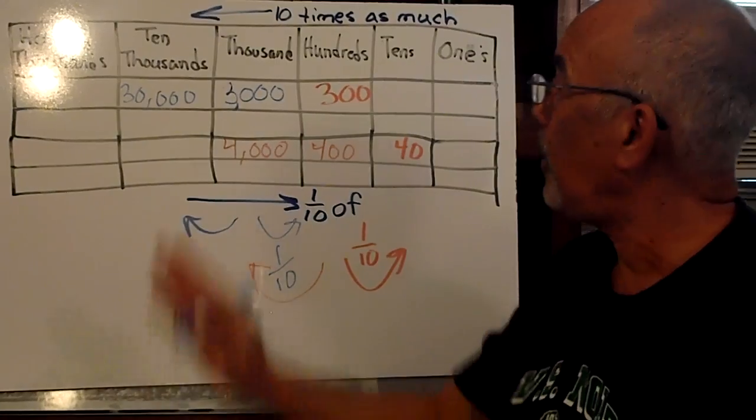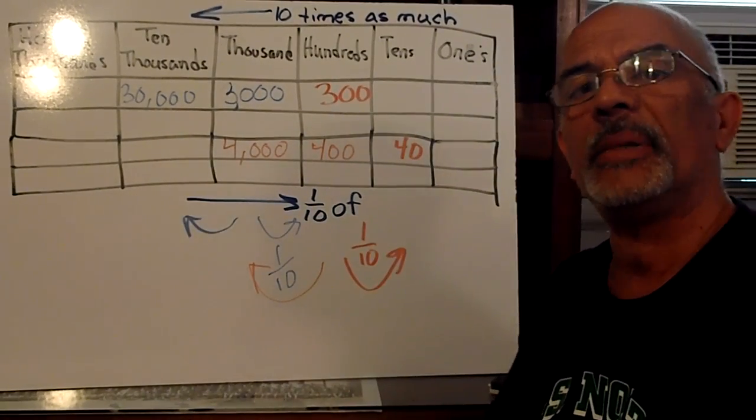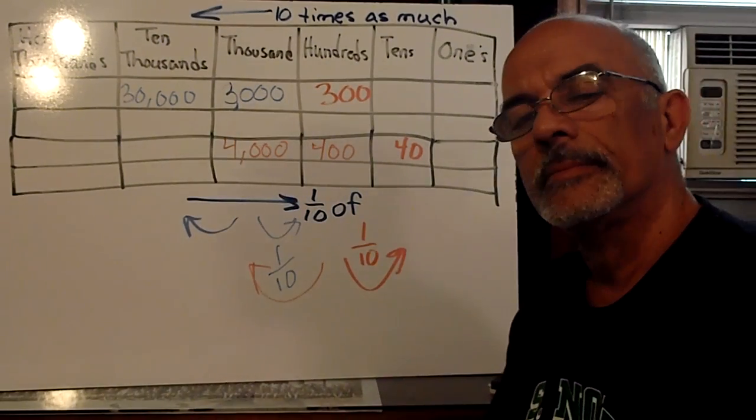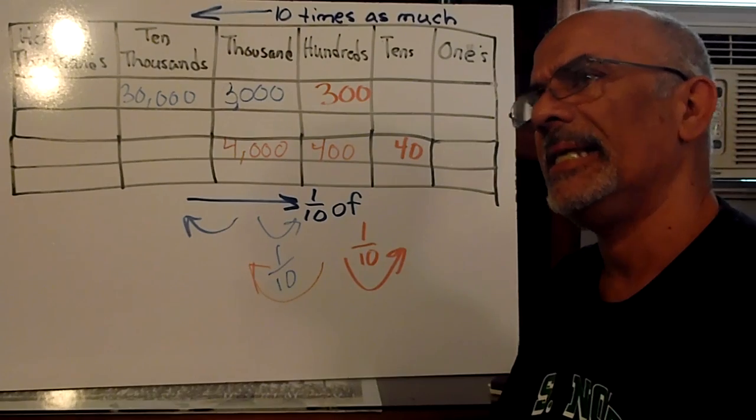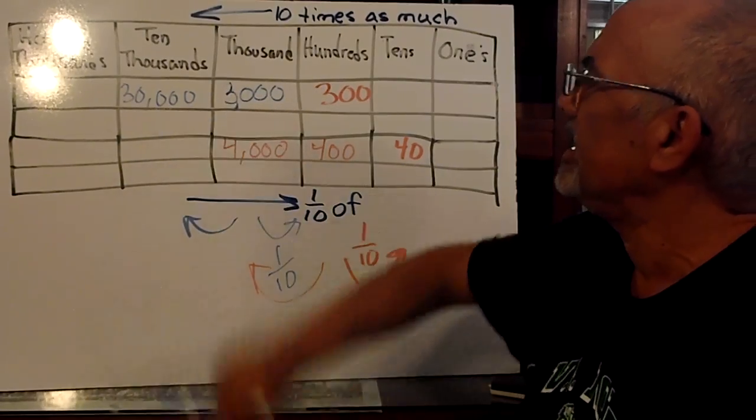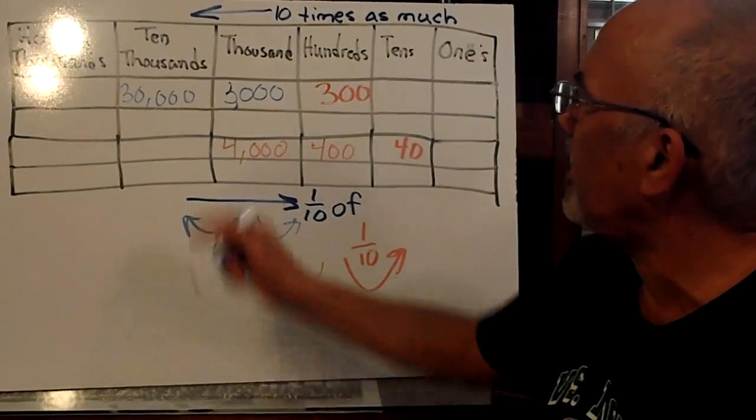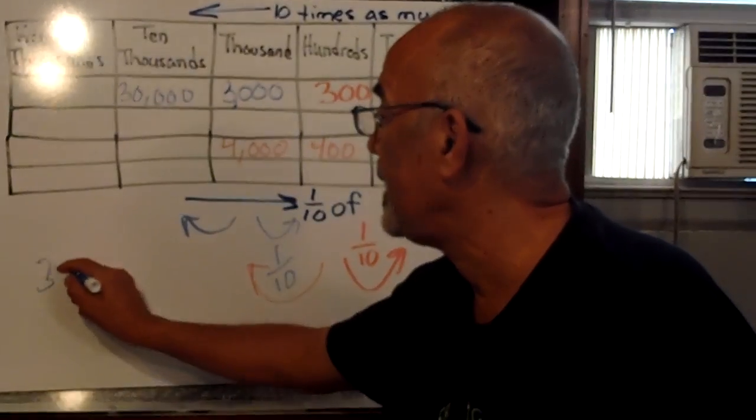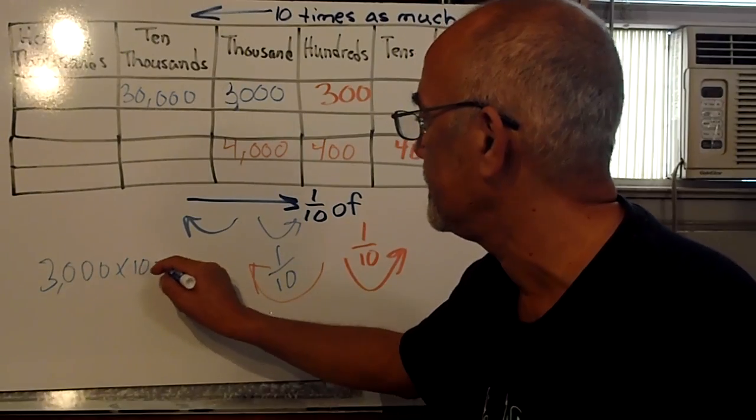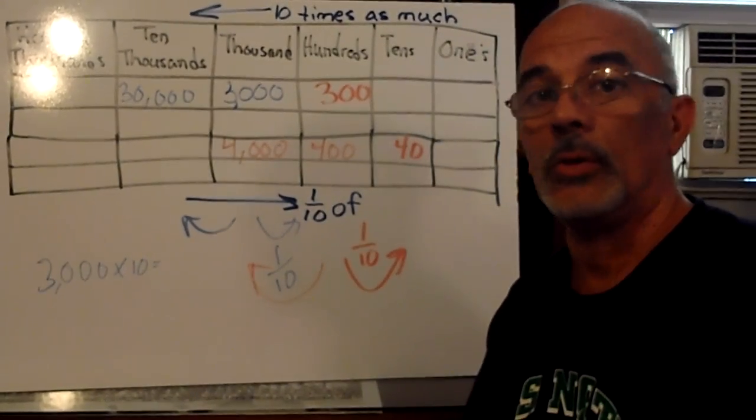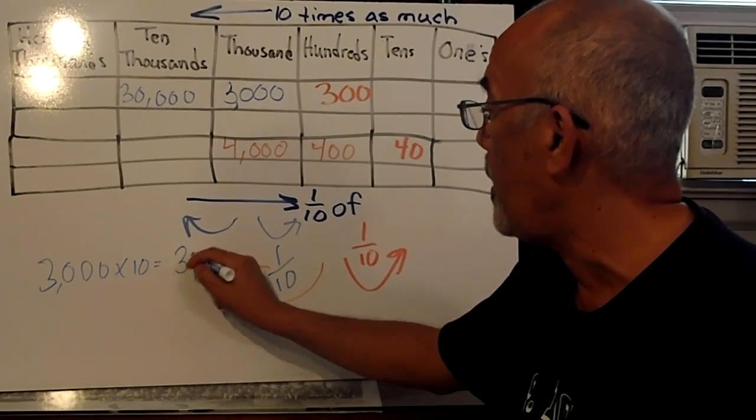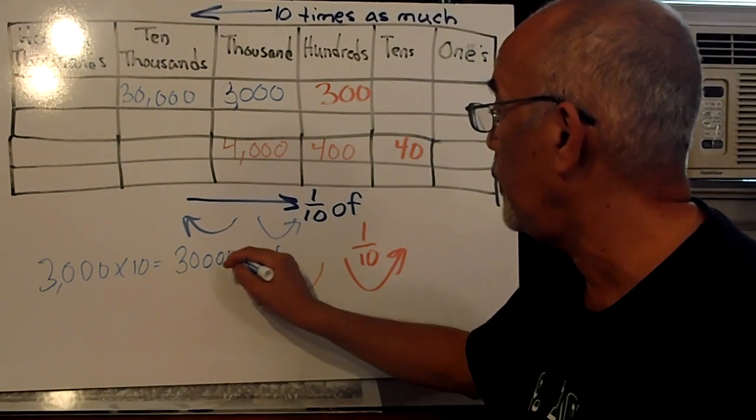Let's look at this example here. How we can use this place value to help us find the answer to some numbers. Let's say I have 3,000. What number is 10 times that? 10 times 3,000 is 30,000. You see it here. 3,000 times 10. And we know that if we times 10, all we have to do is add another zero. So we got 4 zeros.